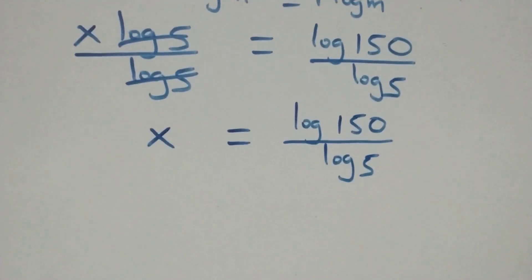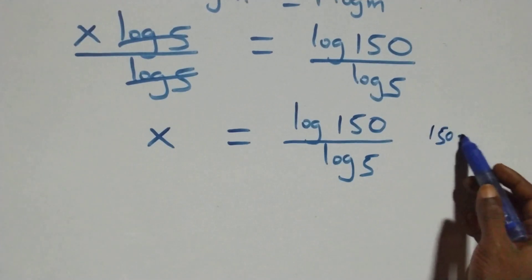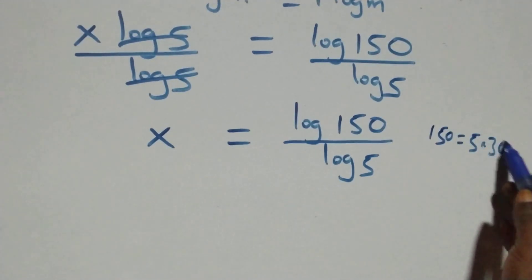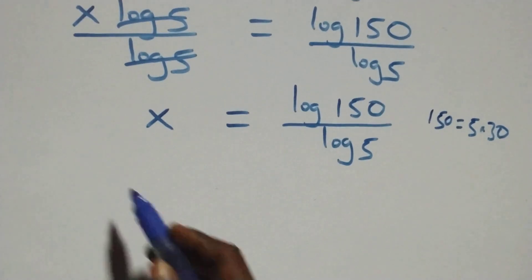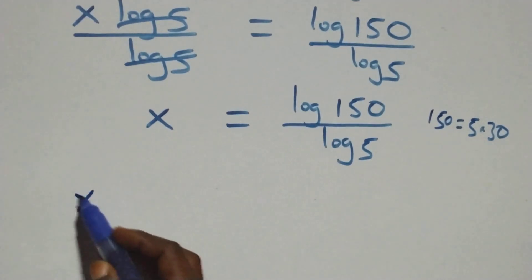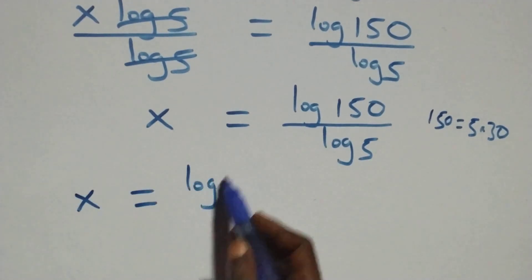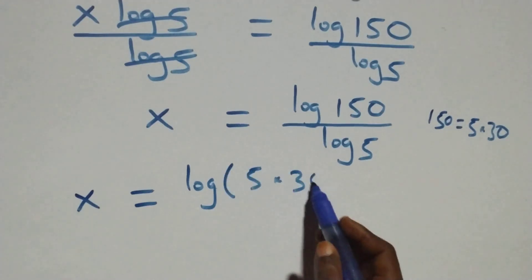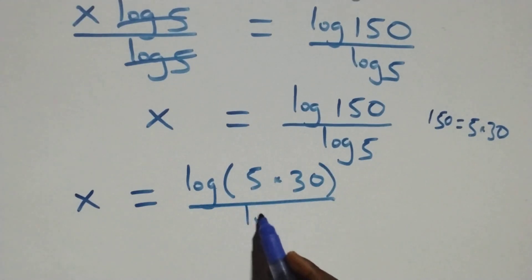Next, we can write 150 as 5 times 30. So we have x equals log(5 times 30) over log 5.